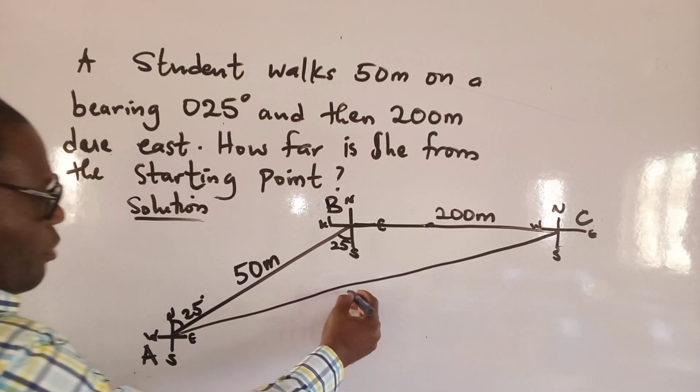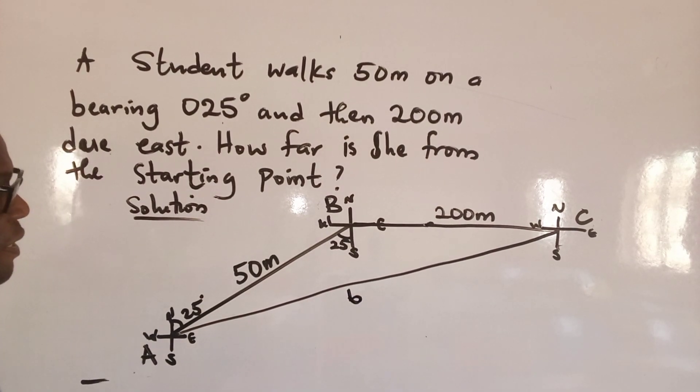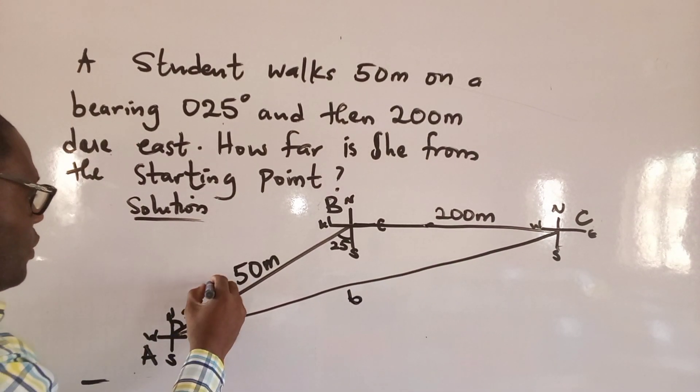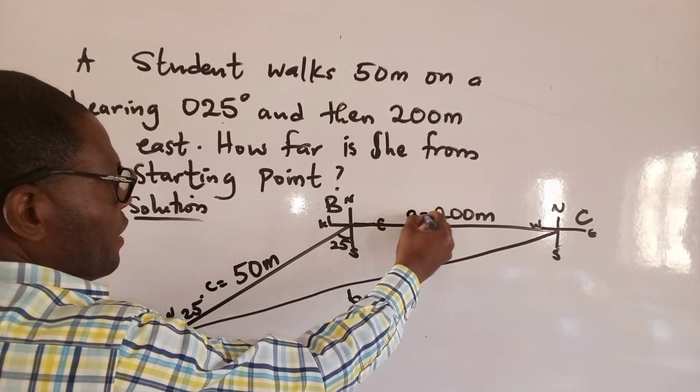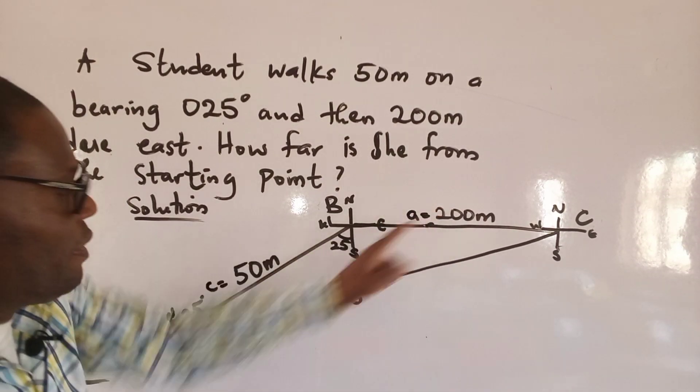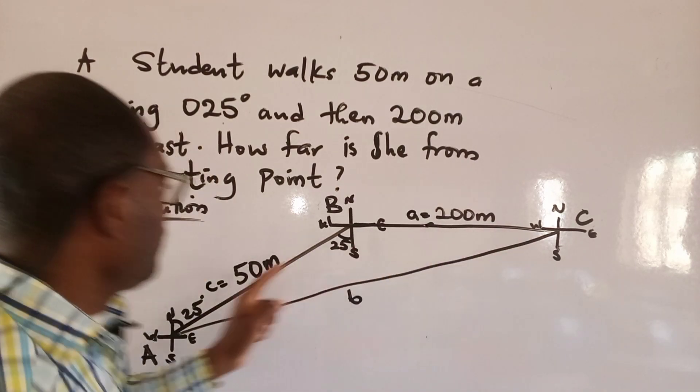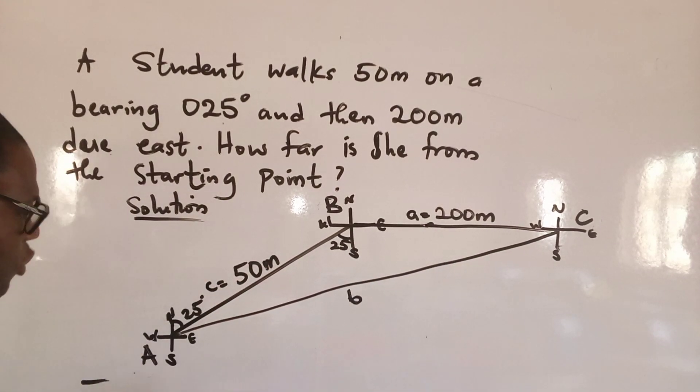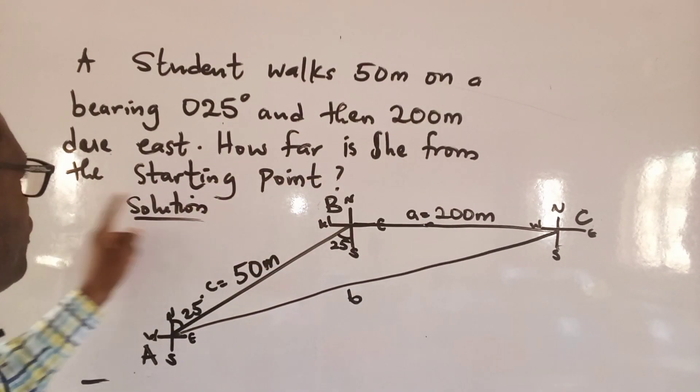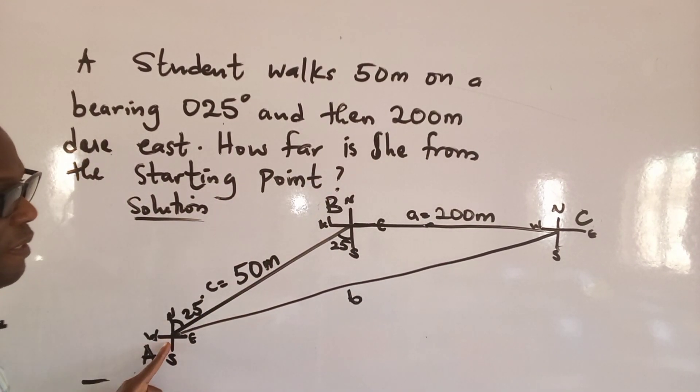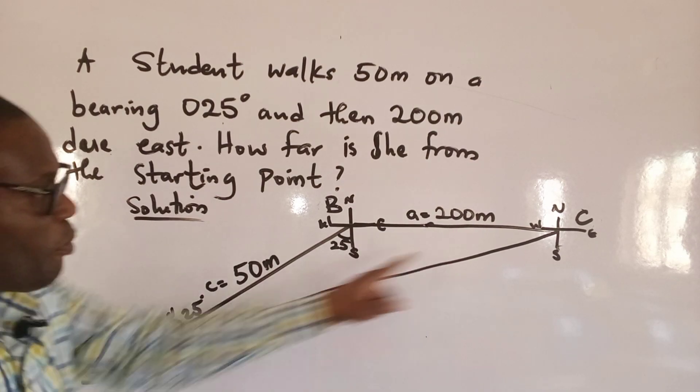So here is going to be my small b. Here is going to be my small c. And here is going to be my small a. It's the opposite of it. So now, we are asked to solve how far is she from the starting point? This is the starting point. This is the third point she got to.